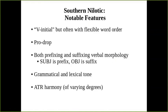Some relevant typological features useful for today's discussion: Southern Nilotic languages are typically described as verb-initial, but they often exhibit flexible word order. They are pro-drop languages with both prefixing and suffixing verbal morphology. Notably, subject indexation is indicated through prefixes and object indexation is coded through suffixes. There is grammatical and lexical tone, and also varying degrees of ATR harmony.